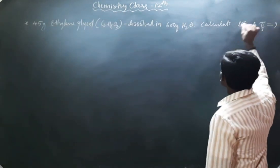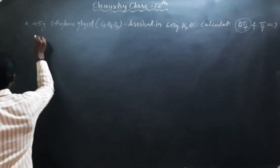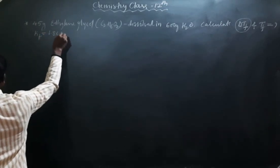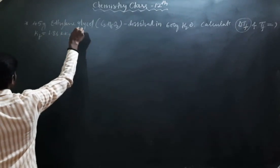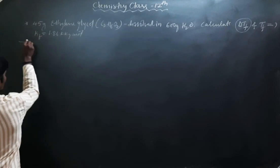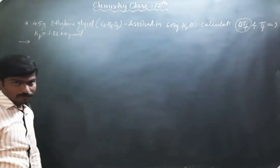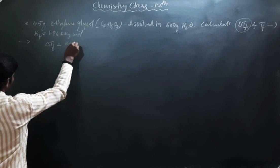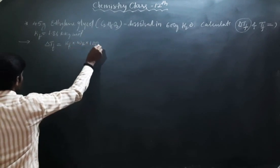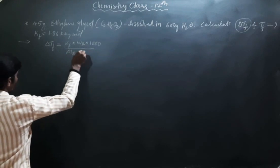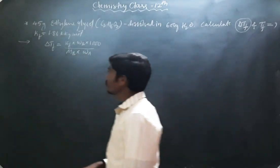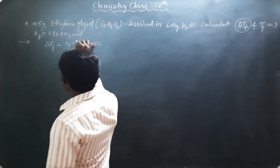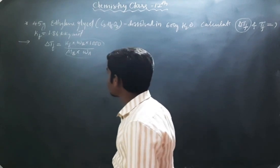To calculate ΔTf, the formula is: ΔTf = Kf × WB × 1000 divided by MB × WA. We can also write this as ΔTf = Kf × m, where m is molality. So we can calculate the molality and substitute. The molar mass of ethylene glycol C₂H₆O₂ is: 12×2 + 6 + 16×2 = 24 + 6 + 32 = 62 g/mol.